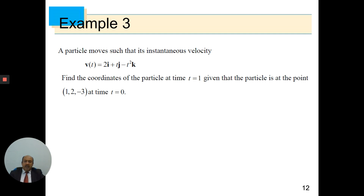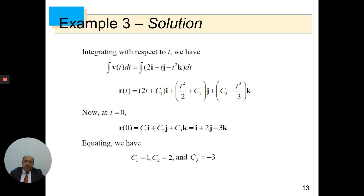Example 3: A particle moves such that its instantaneous velocity is v(t) = 2i + t·j − t²·k. Find the coordinates of the particle at time t = 1, given that the particle is at point (1, 2, −3) at time t = 0. This is a three-dimensional case. Solution: Integrating with respect to t, we have r(t) = (2t + c₁)i + (t²/2 + c₂)j + (−t³/3 + c₃)k.